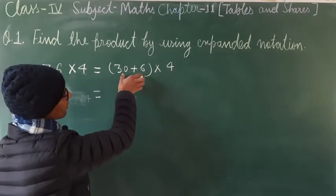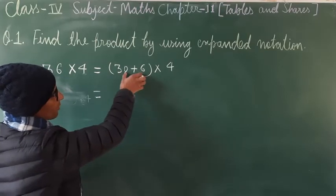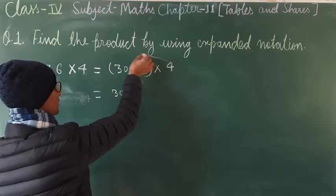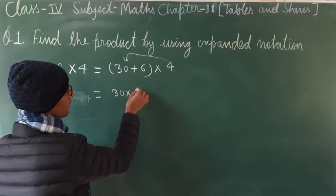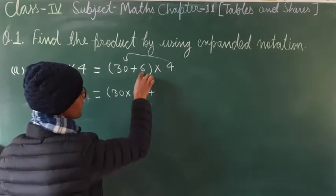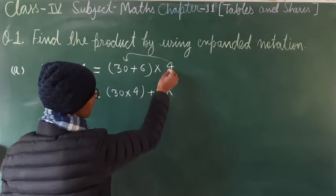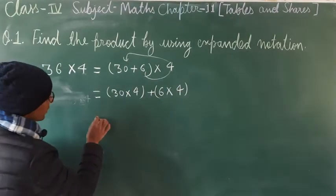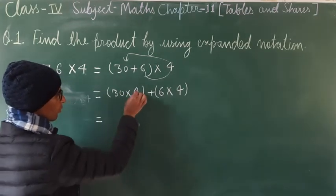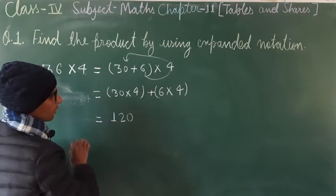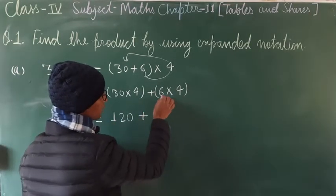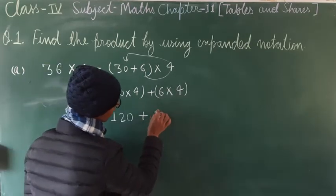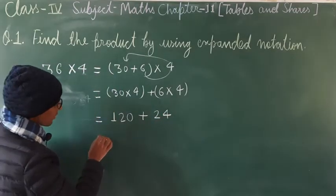36 written in expanded notation as (30 + 6), multiplied by 4. We take 30 and multiply it by 4: 30 × 4. Then plus 6 × 4. Solving: 4 × 3 = 12, so 30 × 4 = 120. Plus 6 × 4 = 24.